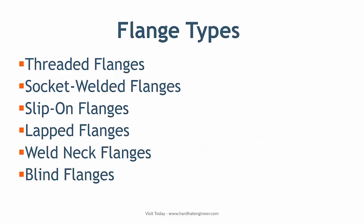Flanges are the second most used joining method after welding in piping. Flanges connect pipe with various equipment and valves. They provide flexibility for maintenance. Different types of end connections are used to connect the flange with pipe depending on the design requirements.